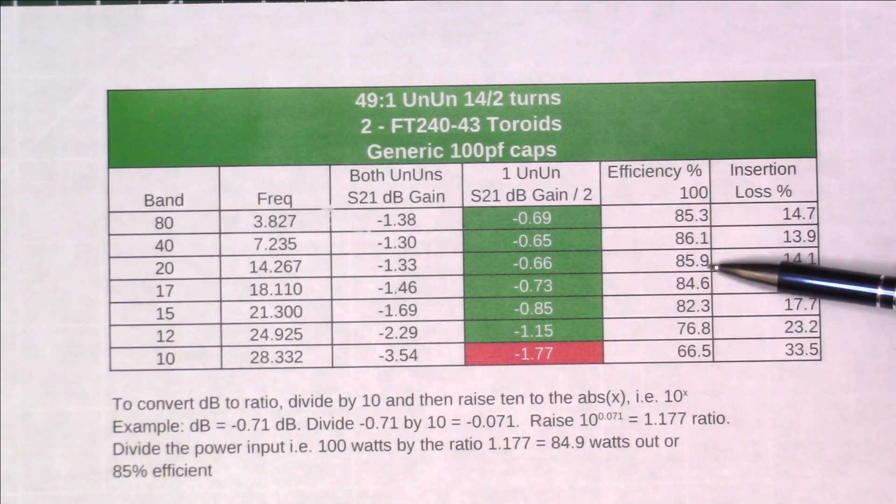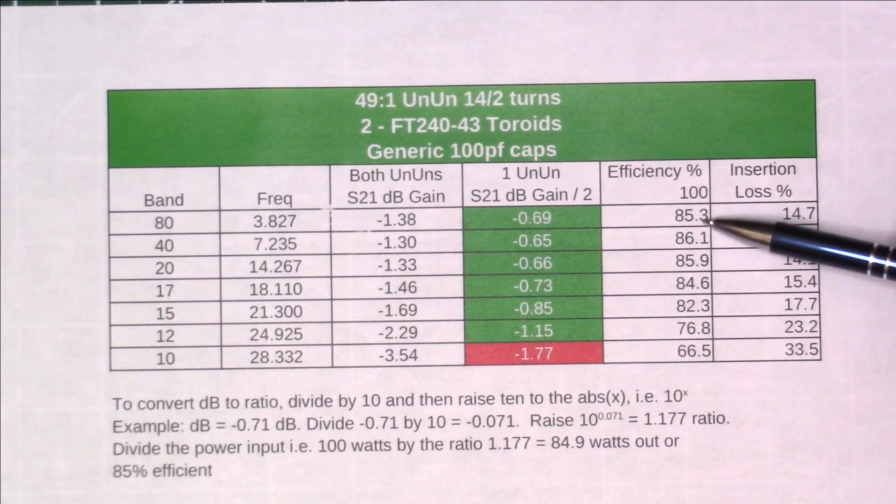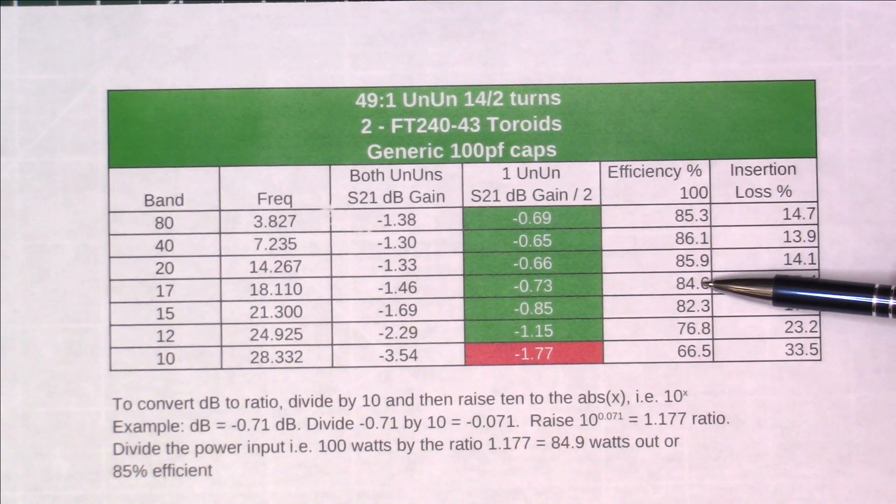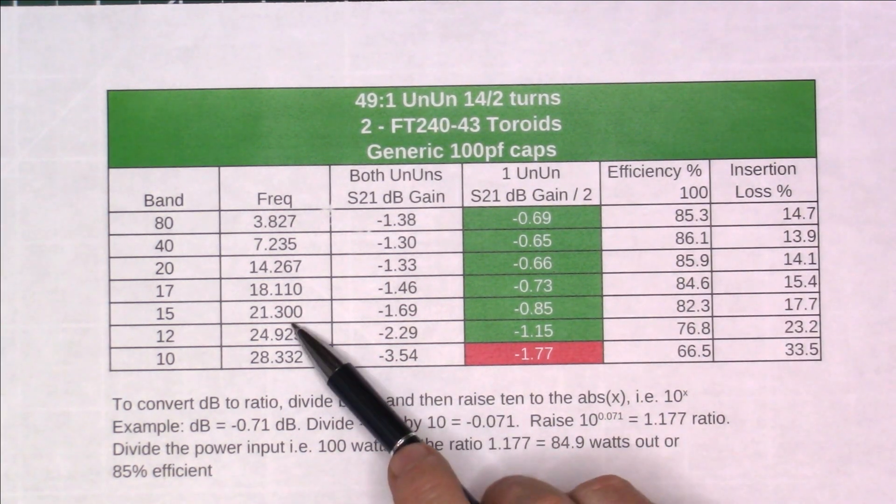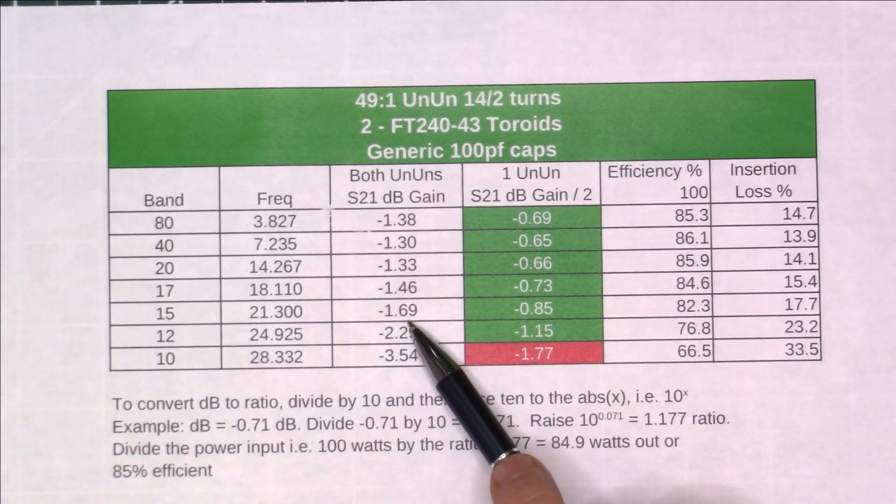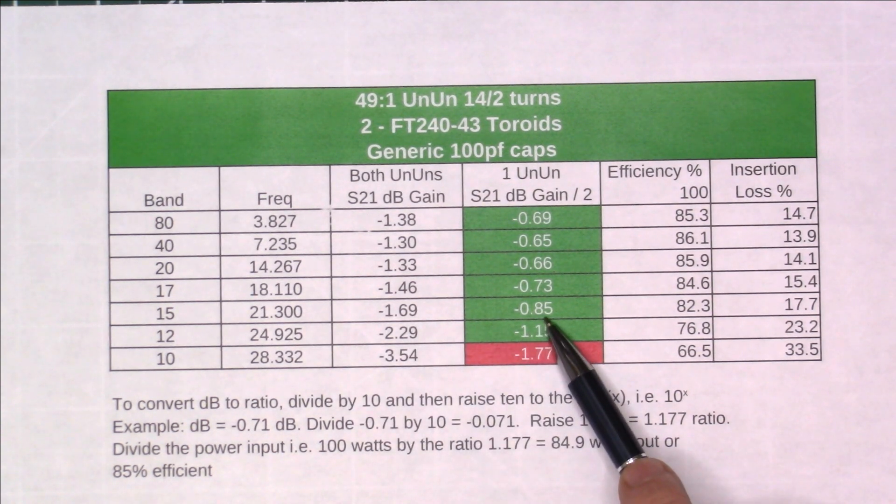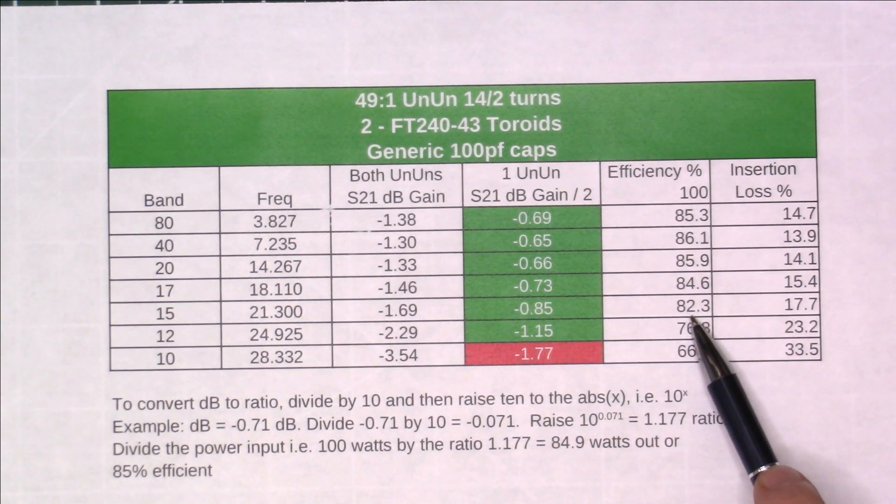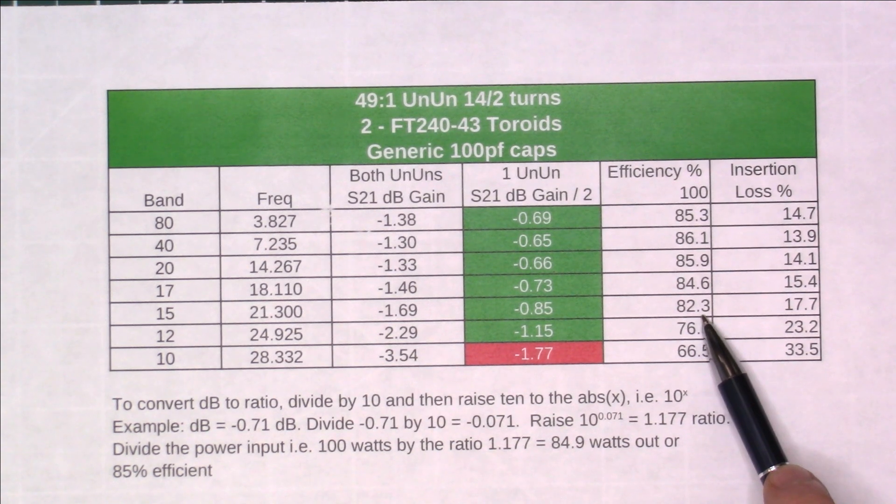And then on 15 meters at 21 megahertz, we had a loss of 1.69 dB, which equates to 0.85 through each, so 82% efficiency, loss of 17%.